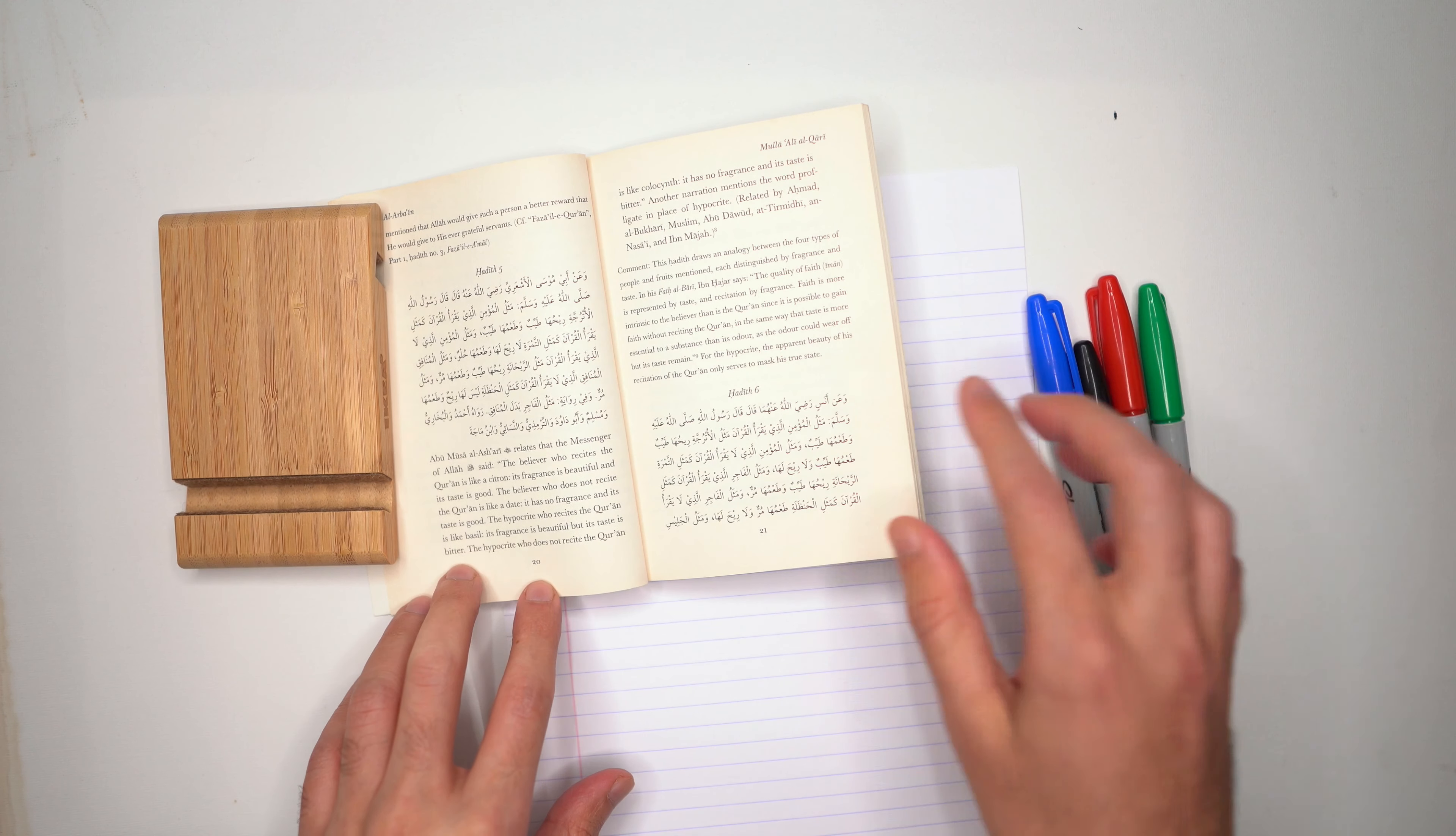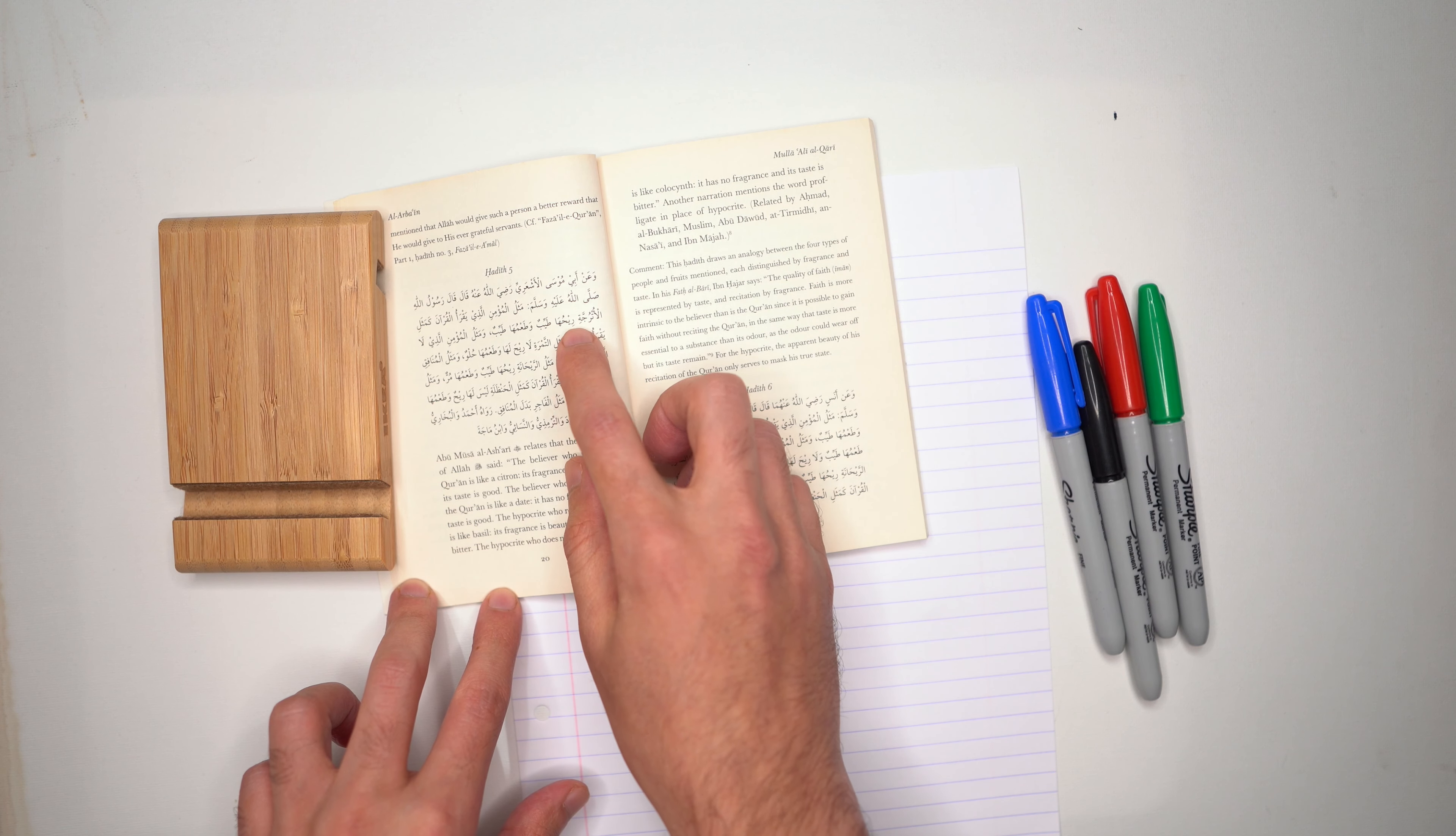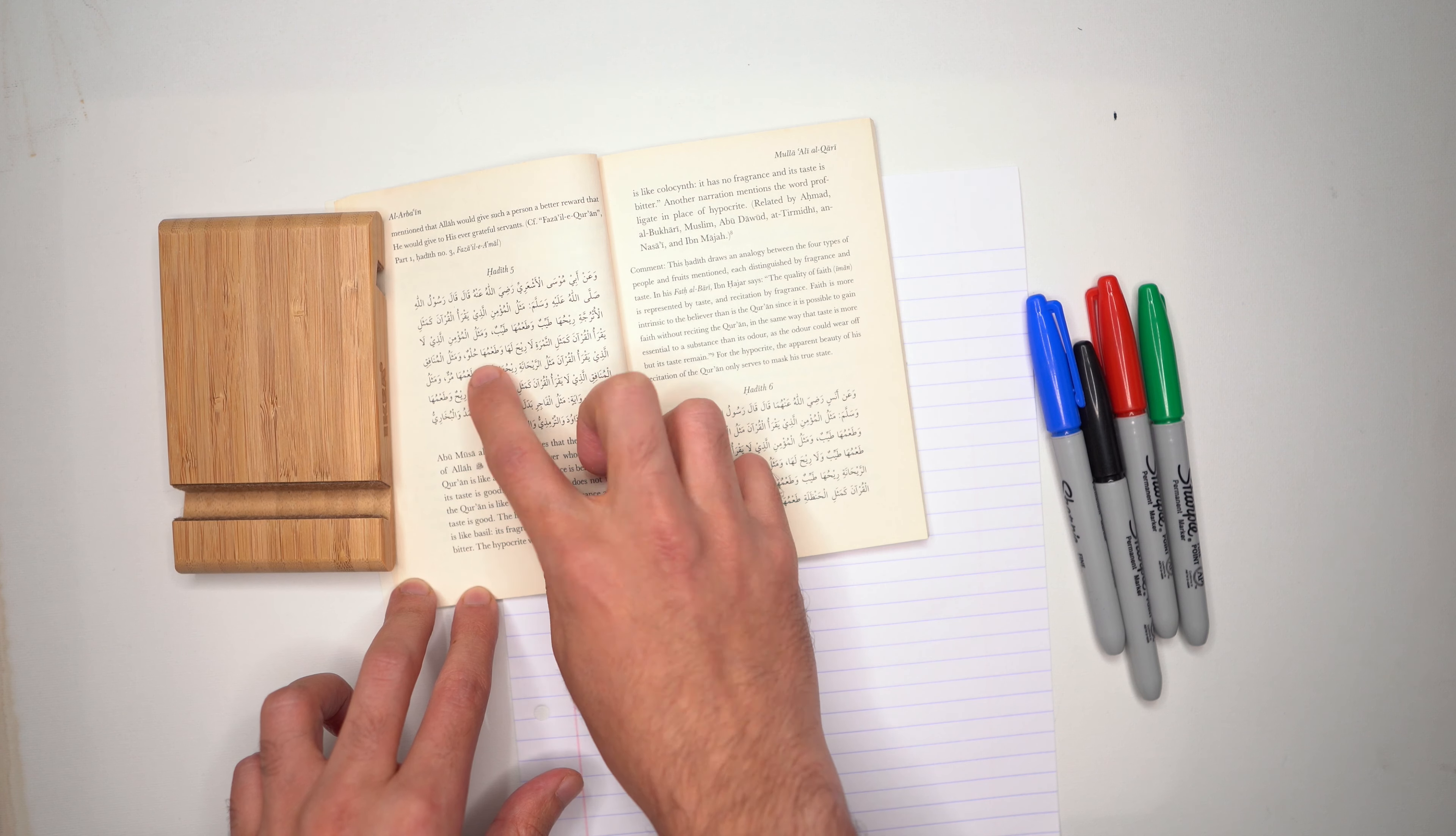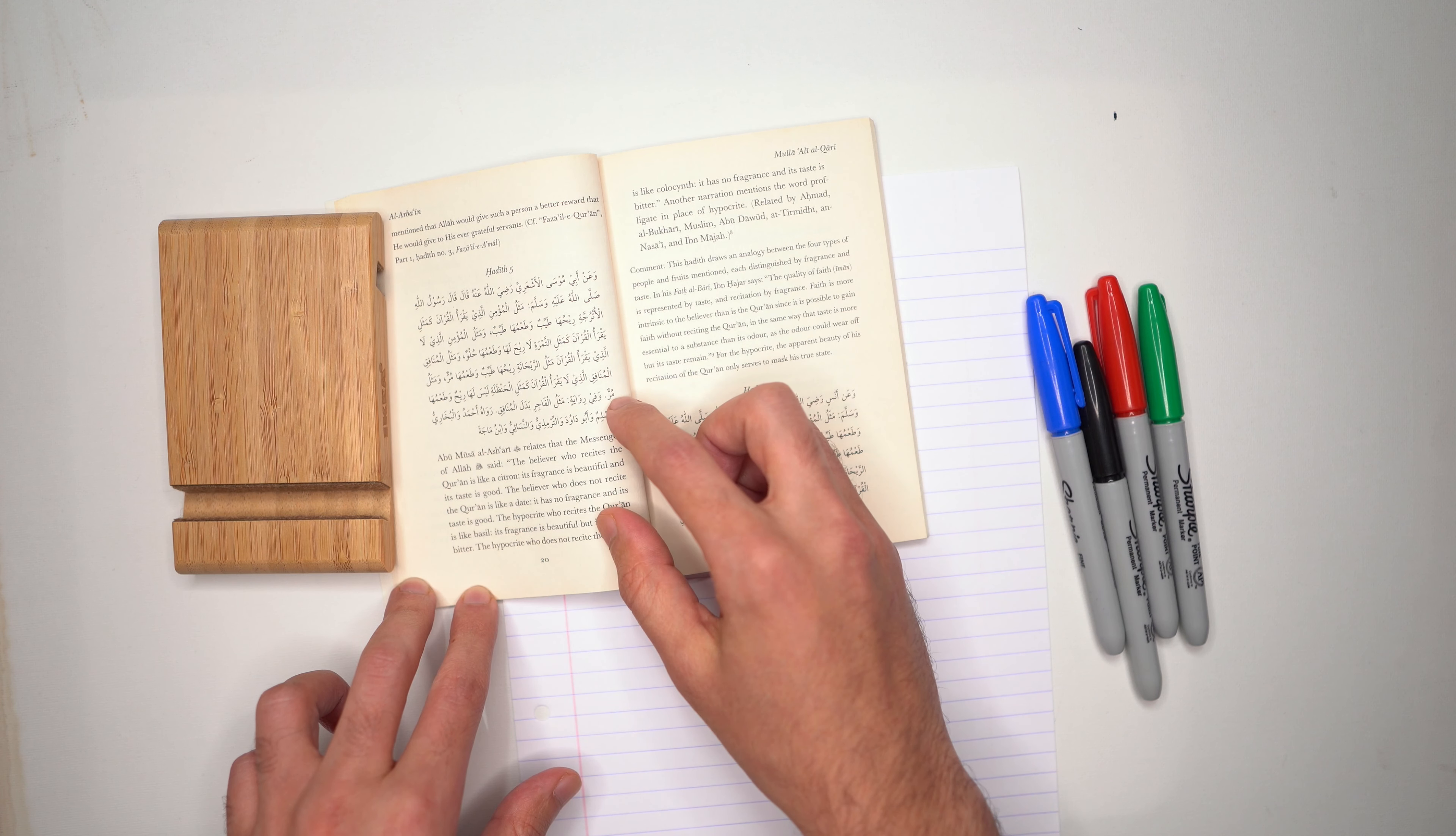The hadith says: وعن أبي موسى الأشعري رضي الله تعالى عنه قال قال رسول الله صلى الله عليه وسلم مثل المؤمن الذي يقرأ القرآن كمثل وترجح ريحها طيب وطعمها طيب ومثل المؤمن الذي لا يقرأ القرآن كمثل التمرأ لا ريح لها وطعمها حل ومثل المنافق الذي يقرأ القرآن مثل الريحان ريحها طيب وطعمها مر ومثل المنافق الذي لا يقرأ القرآن كمثل الحنظرة ليس لها ريح وطعمها مر.